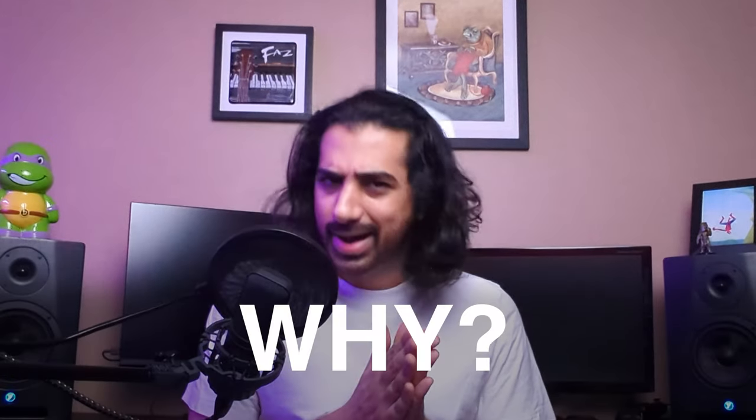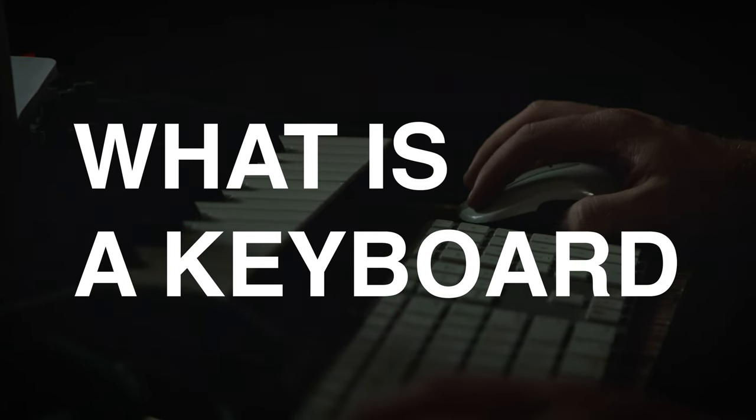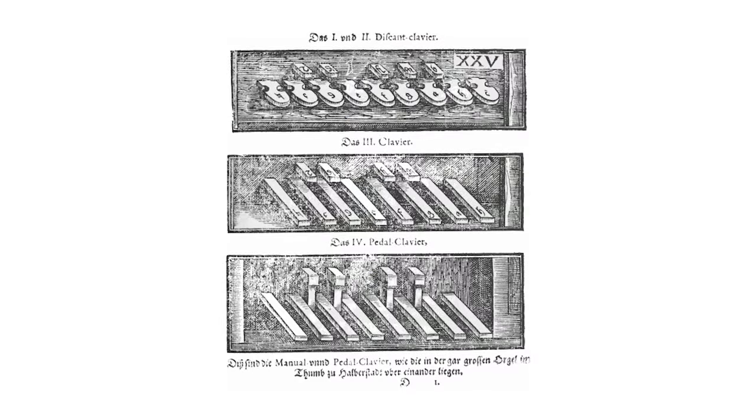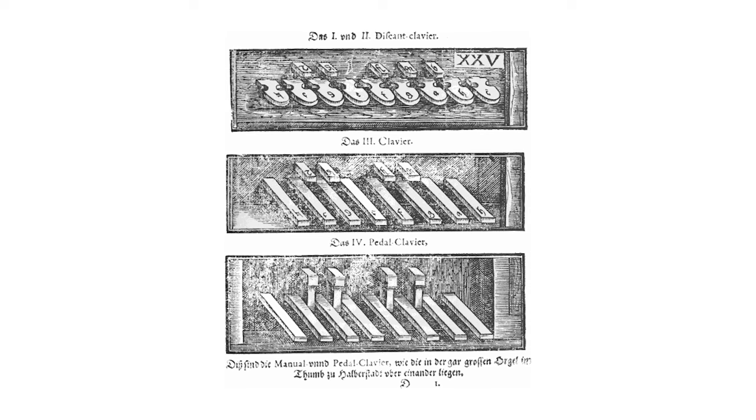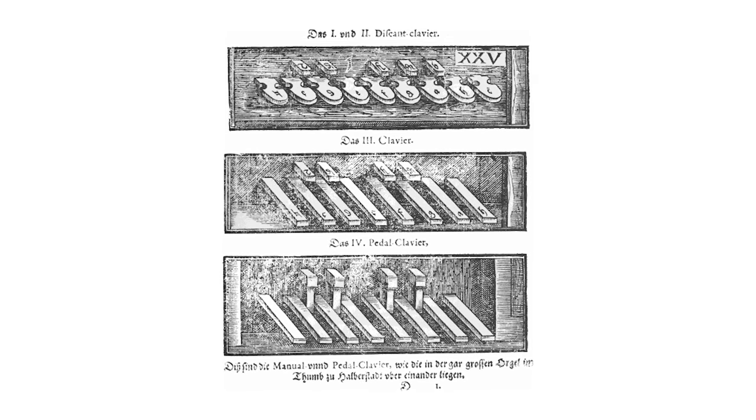But why? We'll get to that soon, but first we gotta go into the history of the keyboard. So first of all, what is a keyboard? What does that mean? Well, it's just a board made of keys. Now a key is anything you press that has a lever or sends an electrical signal.